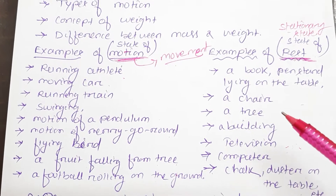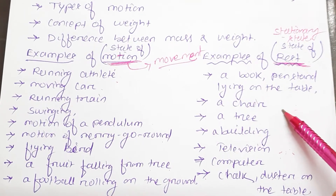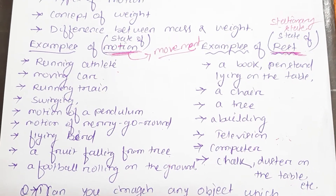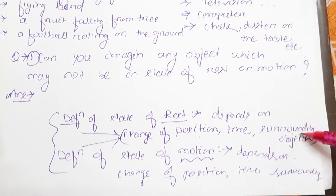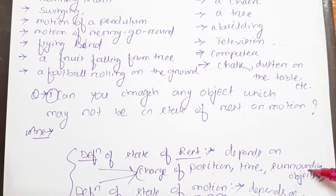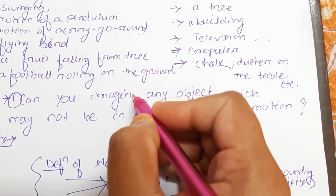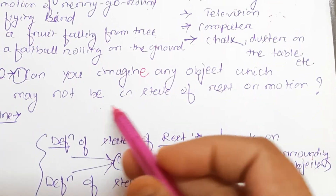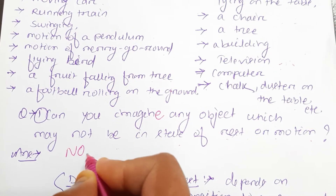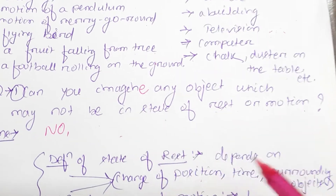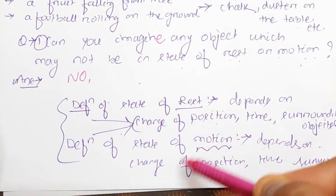So rest and motion are two related but opposite terms. They depend on certain key factors: position, change of position, time, and the surroundings of the object. Can you imagine any object that is neither in a state of rest nor in motion? The answer is no — every object is either in the state of rest or in the state of motion.